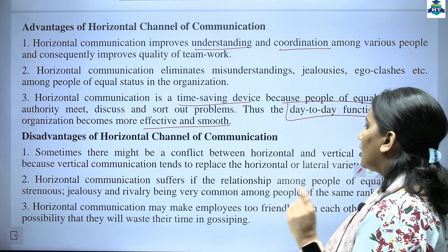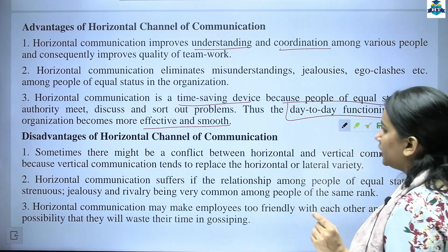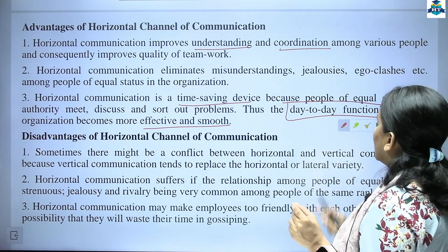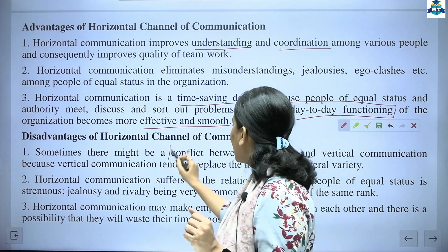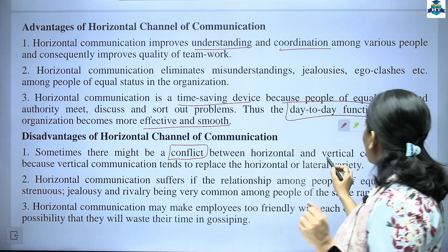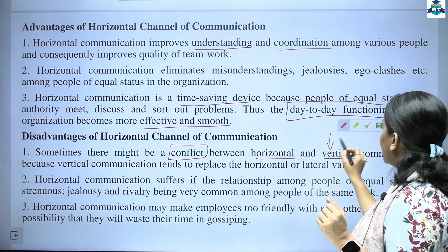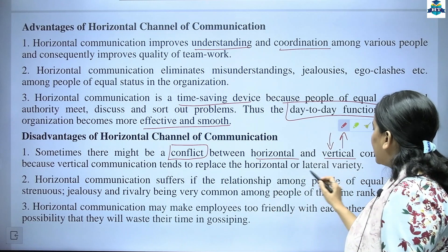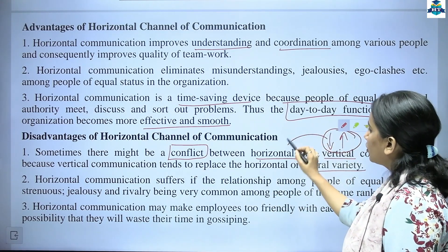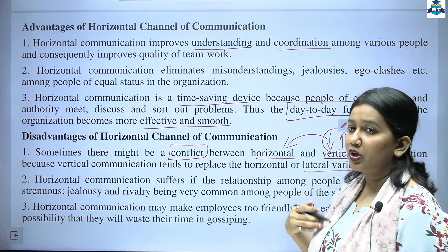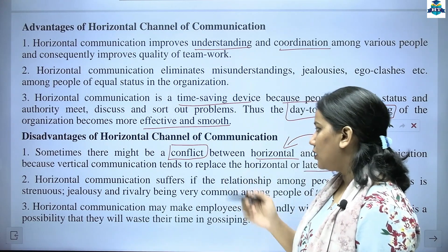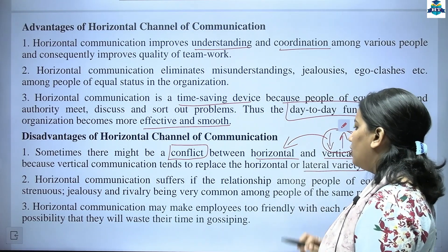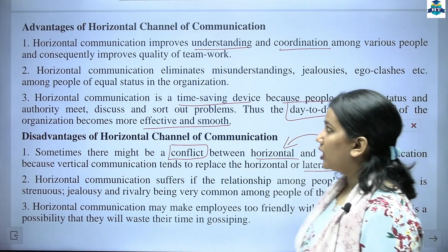Sometimes there might be a conflict between horizontal and vertical communication. Vertical communication tends to replace the horizontal or lateral variety — the tendency is to replace horizontal communication with either downward or upward communication. Horizontal communication also suffers if the relationship among people of equal status is strenuous, with jealousy and rivalry being very common among people of the same rank.